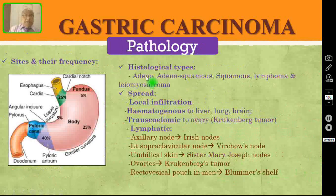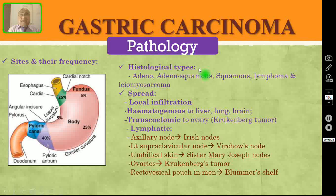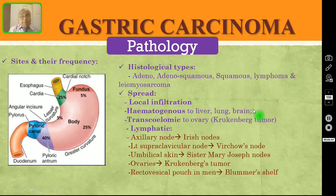Coming to the pathology. What are the various sites in the stomach and their frequency? In the cardiac end and greater curvature, 25%; fundus and lesser curvature, 5%; pyloric antrum, 40%. Histological types include adenocarcinoma, squamous carcinoma, adenosquamous, lymphoma, and leiomyosarcoma. Spread could be local infiltration, hematogenous (to liver, lung or brain), transcelomic to the ovary — called Krukenberg's tumour — or lymphatic.